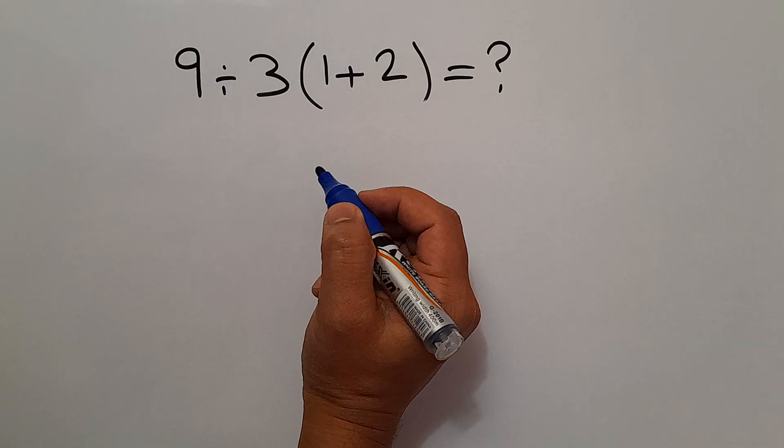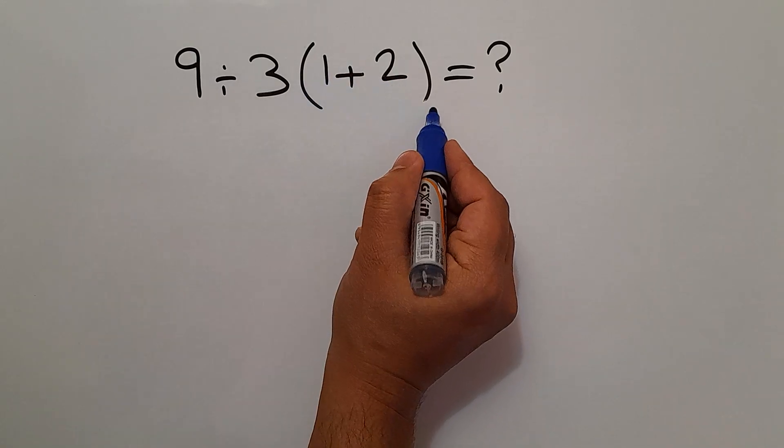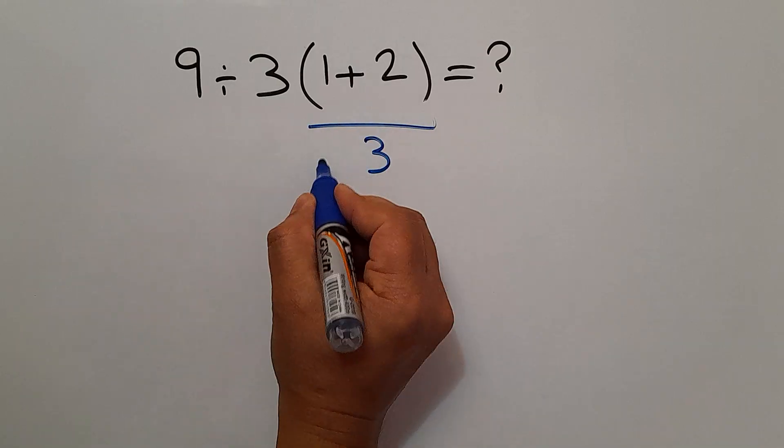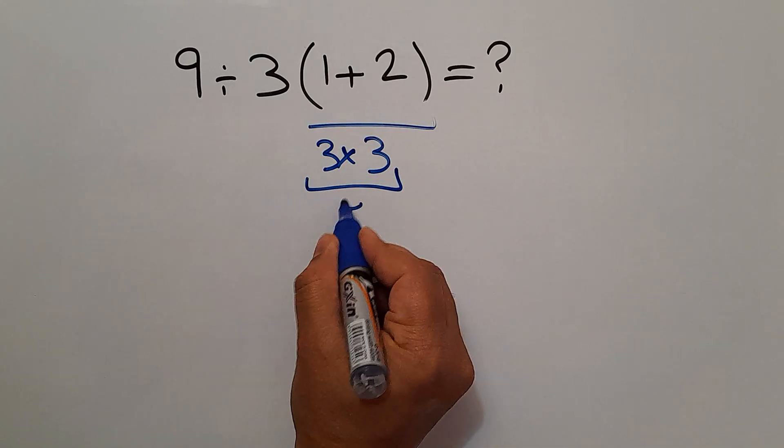Are you ready to solve? Let's go ahead and get started. 1 plus 2 equals 3, and 3 times 3 gives us 9.